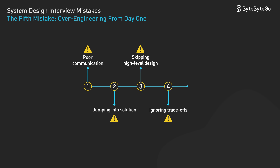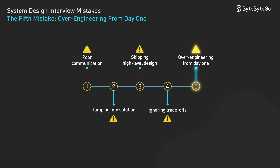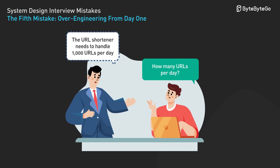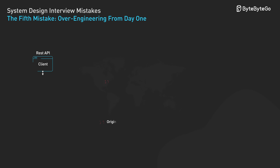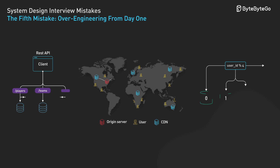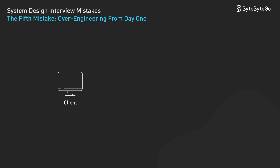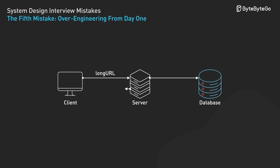Our final mistake is about judgment and scale. You've clarified the requirements — the URL shortener needs to handle 1,000 URLs per day. The candidate responds: we'll use microservices for scalability, implement database sharding, and deploy across multiple regions with a CDN. This is massive over-engineering. 1,000 URLs per day is roughly one every 90 seconds — a simple web server with a single database can handle millions of operations per day.